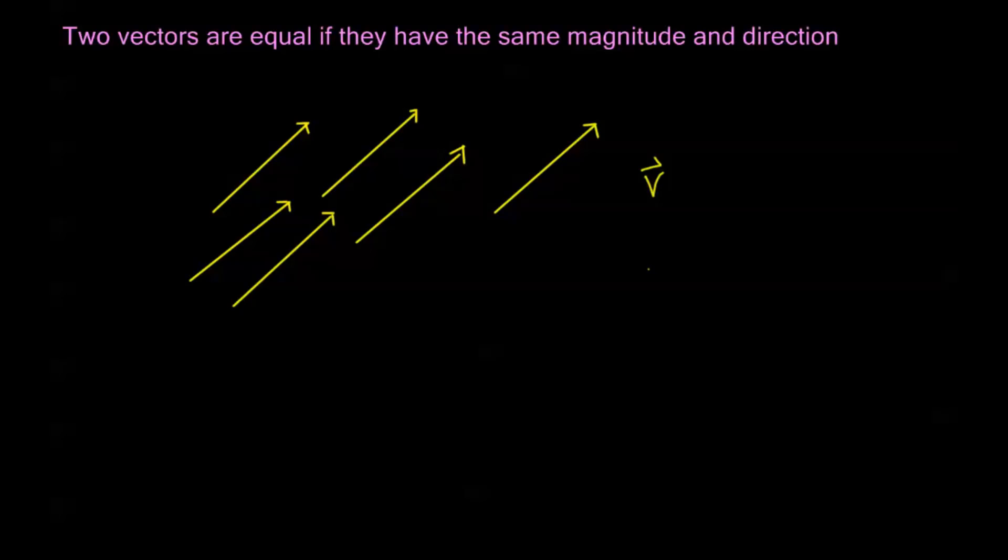Now, because of that, we'll oftentimes draw a vector coming from the origin, because it's easier to do calculations. But we have that liberty because the vector coming from the origin is the same as the vector anywhere else in space.